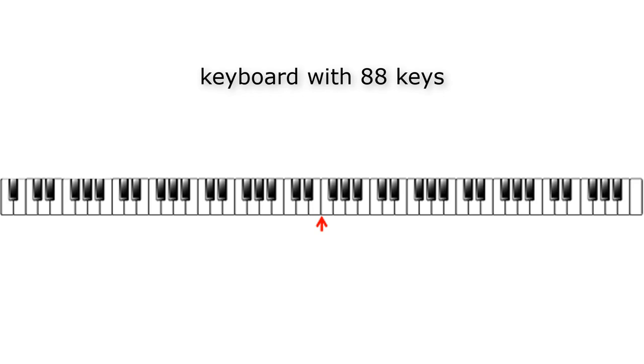And the nearest C is the C that is just on the left side, and that is the middle C. On a keyboard with 88 keys, this is the fourth C from the left side.